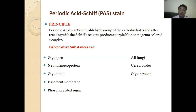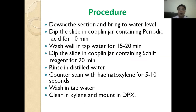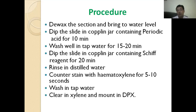Now we are going to discuss the procedure of PAS staining method. First, dewax the section and bring it to water level so that the excess wax can be removed. In the next step, dip the slide in a Coplin jar containing periodic acid and keep it for 10 minutes. Then wash well in tap water for about 15 to 20 minutes. In the next step, dip the slide in a Coplin jar having Schiff reagent for 20 minutes.